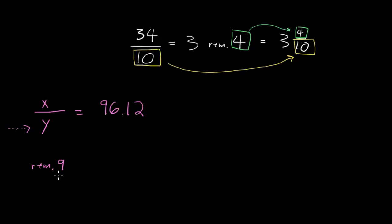So if we're going to make any sense of this remainder, of this 9, I guess what we want is to turn this number, this 96.12, into a mixed fraction like this. So let's do that. 96.12 as a mixed fraction is just 96 and 12 one hundredths.